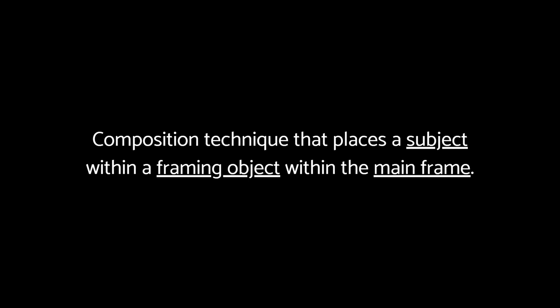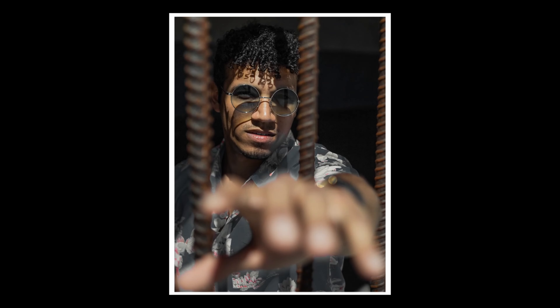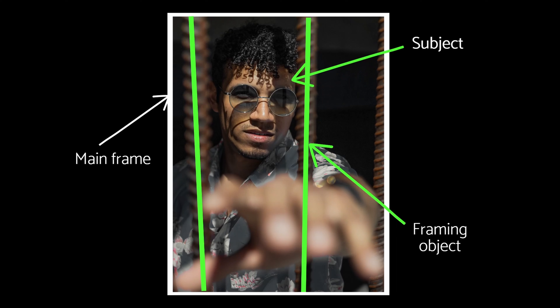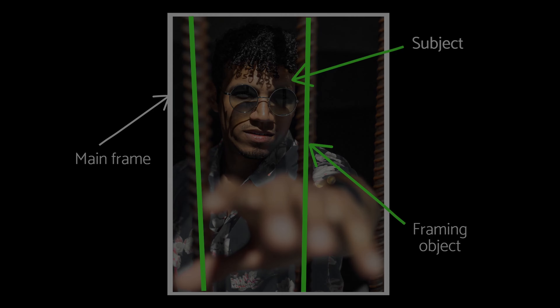The next part deals with placing a subject within a framing object. Within any image, there is usually a subject or main focal point that the viewer should be drawn to, or else the image is lifeless. Examples of subjects can include hills on a mountain, the sun, a person, an animal, etc. The framing object can include anything that acts like a frame, such as a doorway, a window, arches, etc. The subject, along with the framing object, should be placed within the main frame, which is the framing of the image itself and how it's cropped. In this image I took, the main subject is my buddy Blake, and the framing objects are those iron bars, causing a frame within a frame.